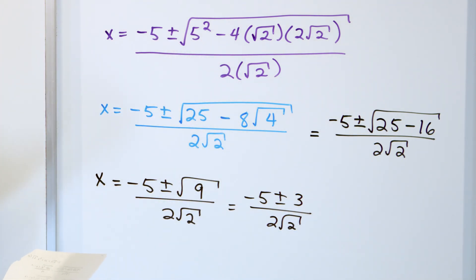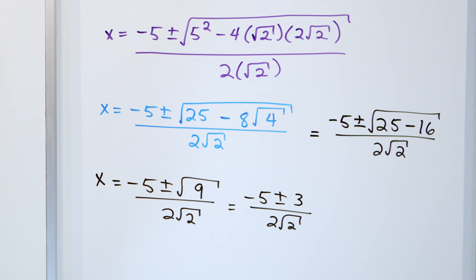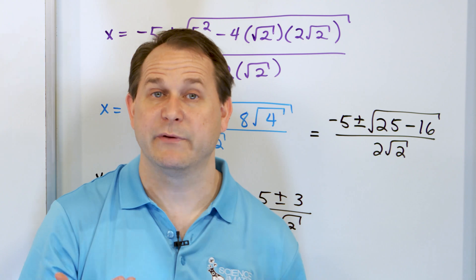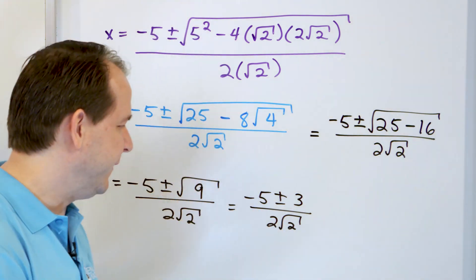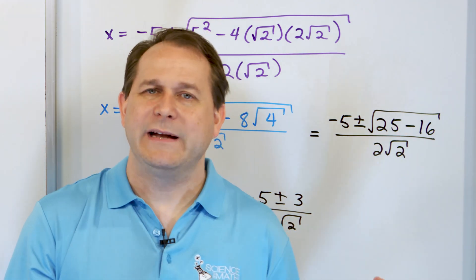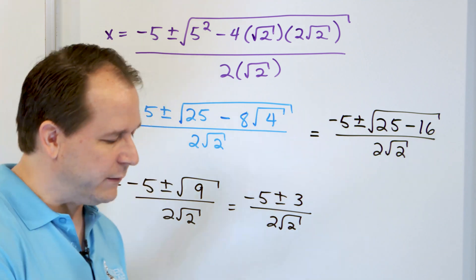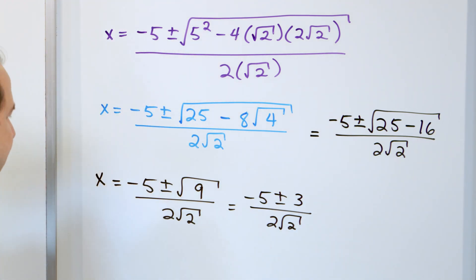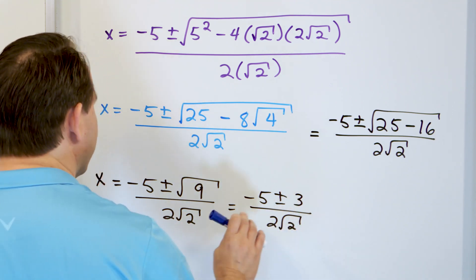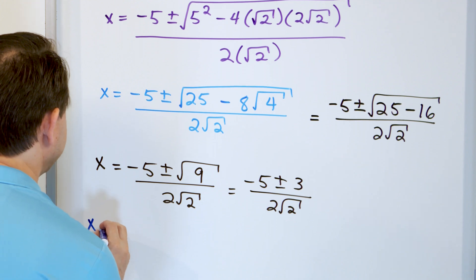Let me double check — negative 5 plus or minus 3, over 2 root 2 on the bottom. You could circle this as the answer, but those of you who've been with me through the radicals can see the problem: we don't like radicals in the bottom of fractions. So we want to get rid of that. The way you're going to do that is by multiplying by square root of 2 on the top and bottom to rationalize the denominator. It's ugly, but this is how you handle it.